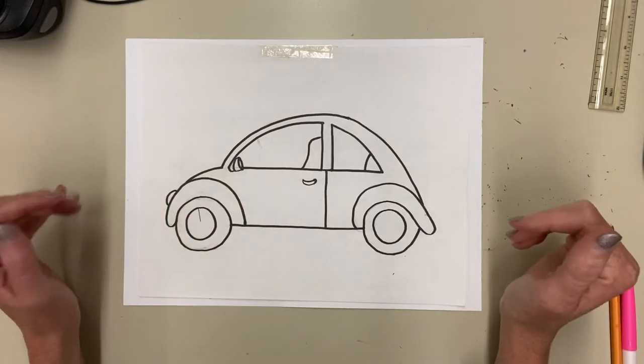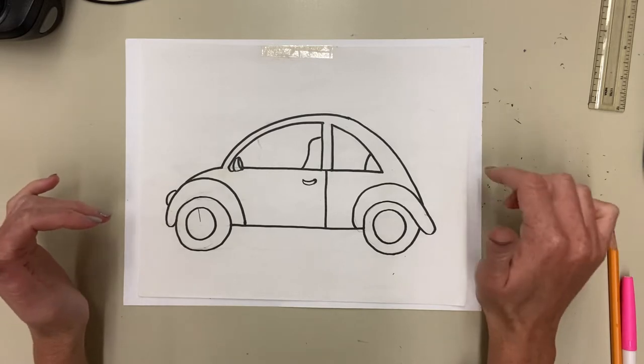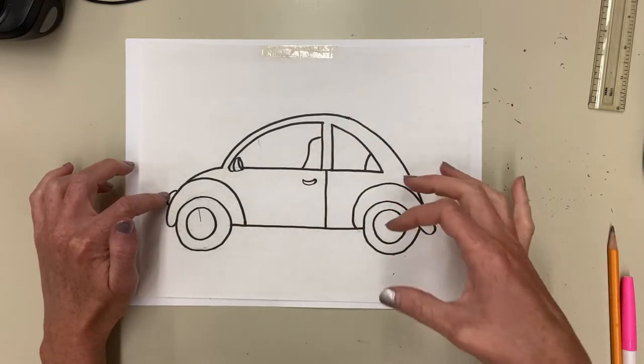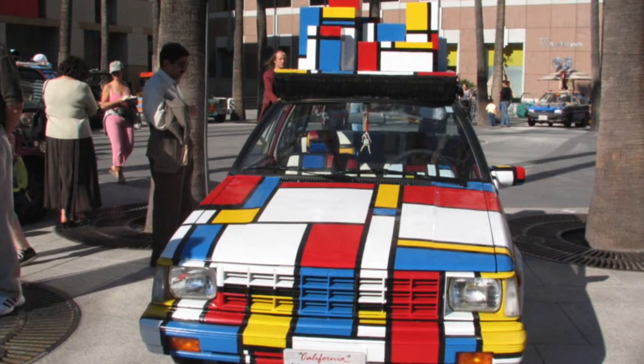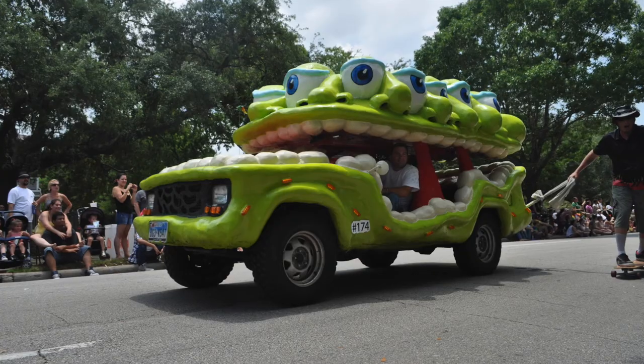Hey boys and girls, welcome to Art Recycle with Mrs. Hallemeyer. Today we are going to draw a Volkswagen Beetle car. I do this lesson with my 5th graders and we do this lesson based on art cars. What's an art car? An art car is a car that is decorated to the max with one central theme. So it's kind of like these cars you see here.